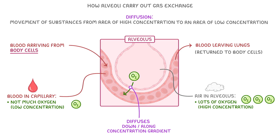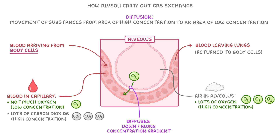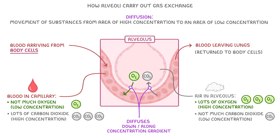On the other hand, because carbon dioxide has been produced by body cells during respiration, there's lots of carbon dioxide in the capillaries around the alveolus, so in the blood here there's a high concentration of carbon dioxide. However, there's usually not much carbon dioxide in the air in the alveolus, so it's got a low concentration there. This means carbon dioxide diffuses from the blood into the alveolus, and from there it can be exhaled out of the body.